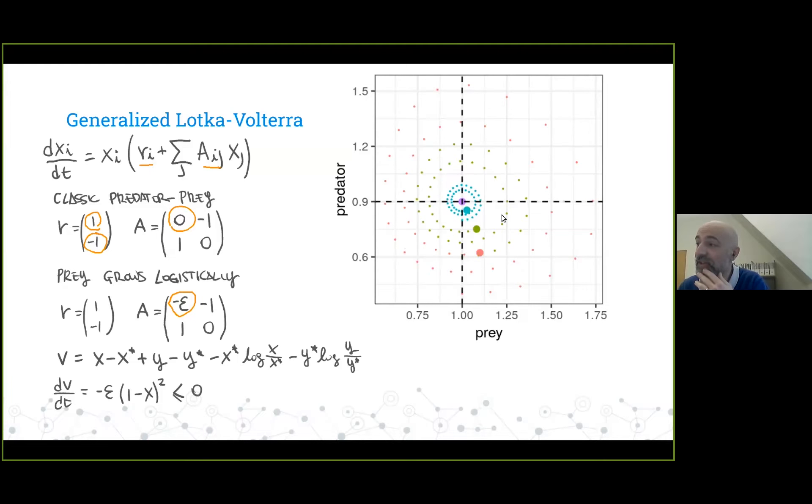When we do this small modification, what happens is all the trajectories now circle around the equilibrium but eventually reach it. They spiral toward the equilibrium. We can write the same constant of motion actually shifted with y-star and x-star such that at equilibrium this constant would be zero. If you take the derivative of this function over time, instead of finding a constant, you find a quantity that is always decreasing. For any epsilon larger than zero, eventually this dV/dt will go to zero, meaning all the trajectories go to equilibrium. This is what we call a Lyapunov function technically.